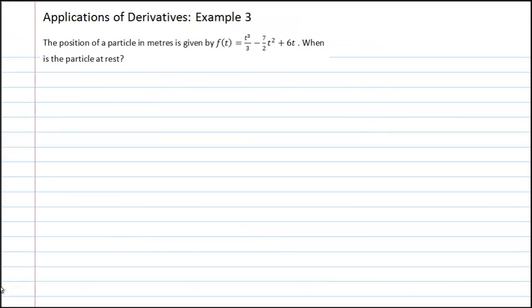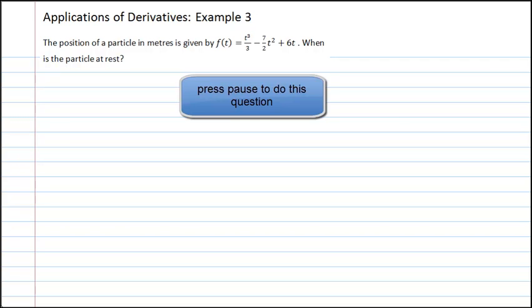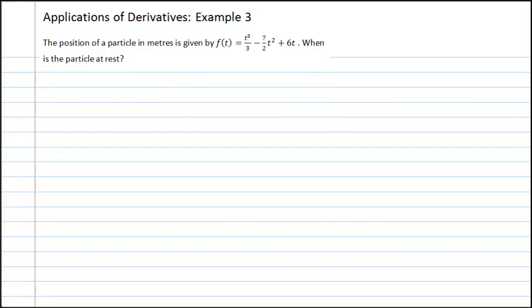Now, here's one for you to try. This problem asks us to find when the particle is at rest, given that the position of a particle can be described by the function f of t equals t cubed over 3 minus 7 over 2 t squared plus 6t. And here's the solution.